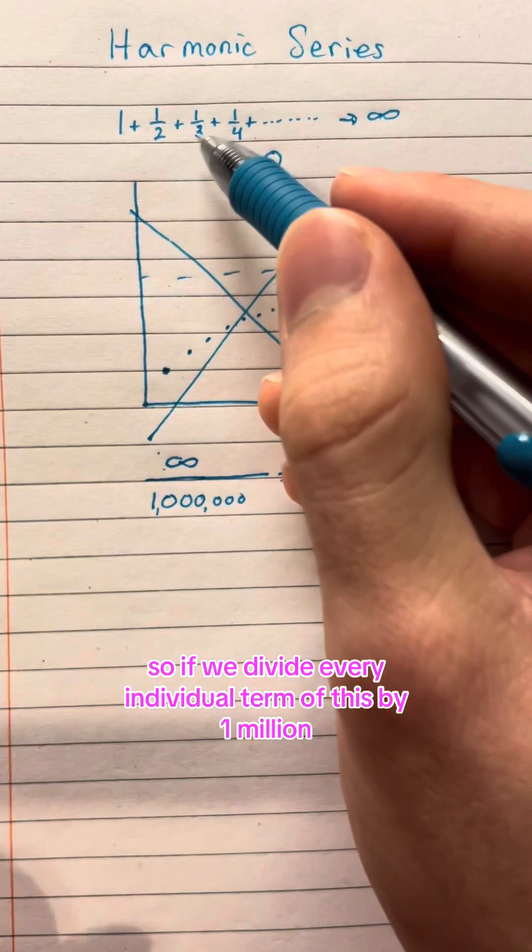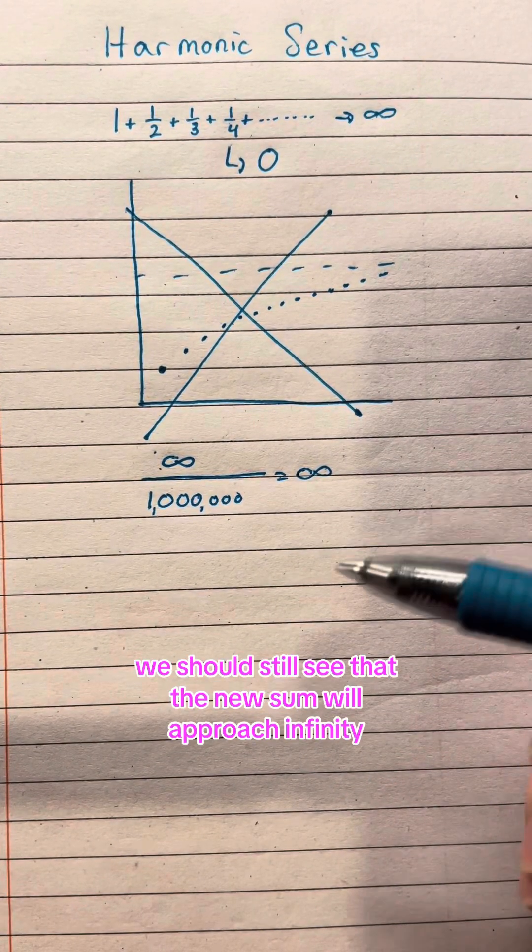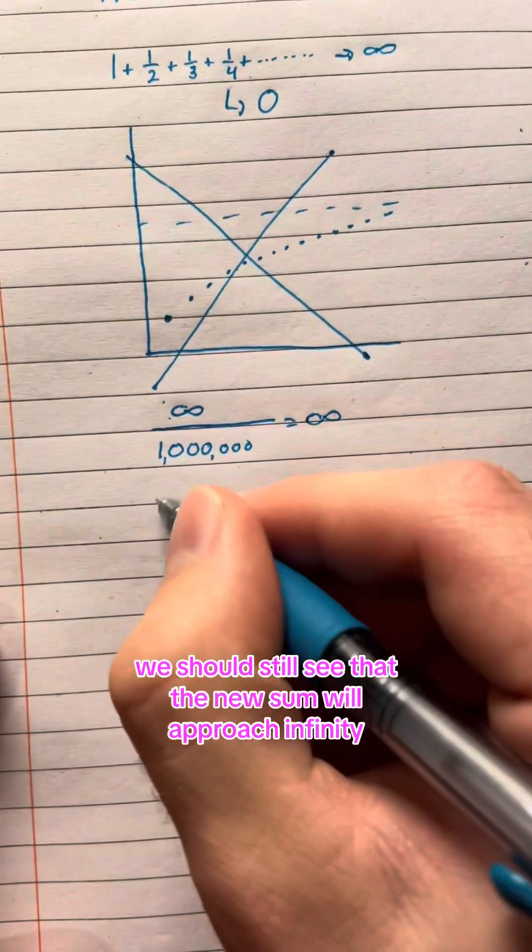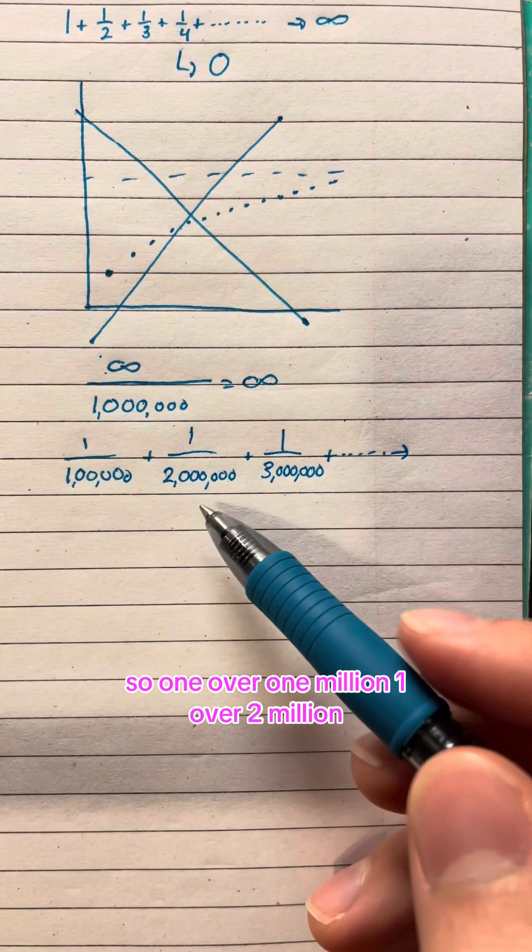So if we divide every individual term of this by one million and we sum them infinitely, we should still see that the new sum will approach infinity. So one over one million, one over two million,